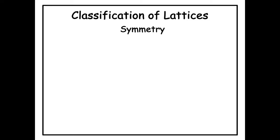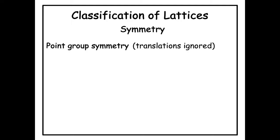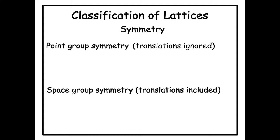The symmetry of a lattice can be classified into two types. Point group symmetry, where we ignore translations and only consider point symmetries like rotations and reflections. Or, space group symmetry, where translation is also included along with point group symmetry. Space group symmetry is the complete symmetry of a lattice or a crystal.